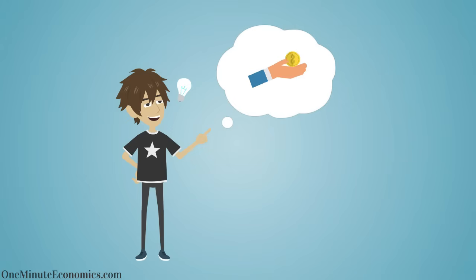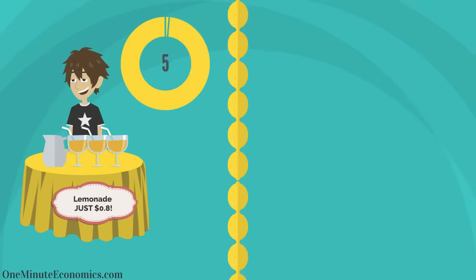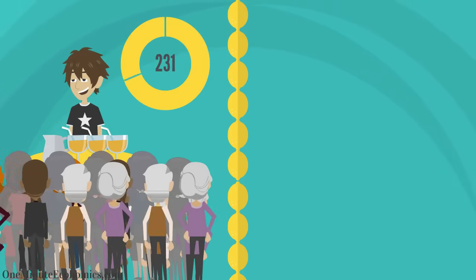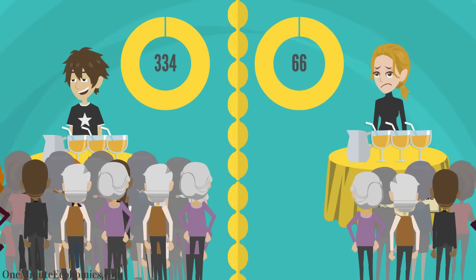One day, Bill thinks about offering lemonade at just $0.80, so $0.30 in profit per glass. However, first, he'd have to sell 334 glasses instead of 200 to earn $100.20 in profit, meaning he'd need to attract 134 of Rachel's 200 customers just so he can make about the same amount as he is now.